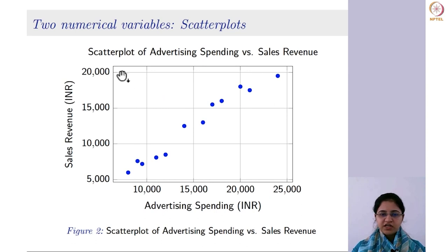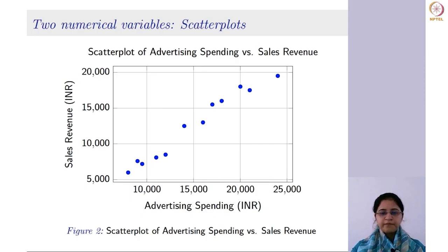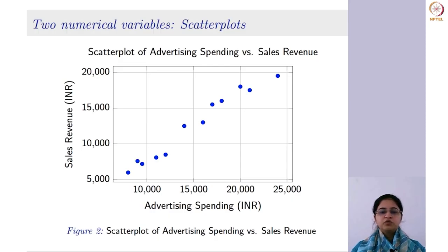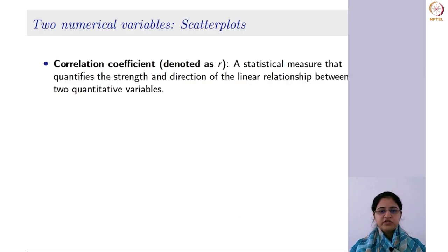The relationship here is linear and strong because the points are close to a straight line. Had it been in the opposite direction, you would say there is a negative relationship. By looking at the scatter plot you can identify the relationship between two numerical variables. However, sometimes visually it is hard to determine the strength, so we use the correlation coefficient — a statistical measure that quantifies the strength and direction of the linear relationship between two quantitative variables.